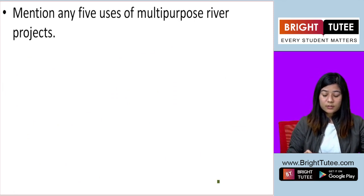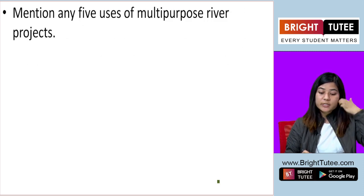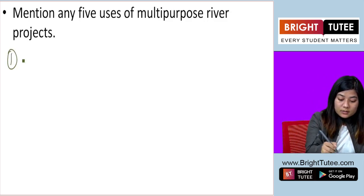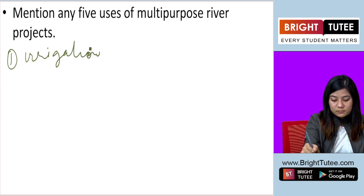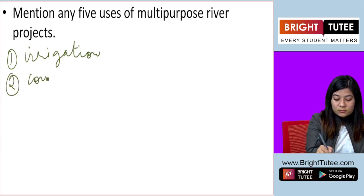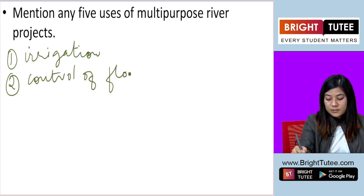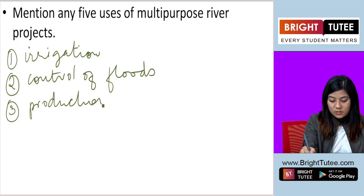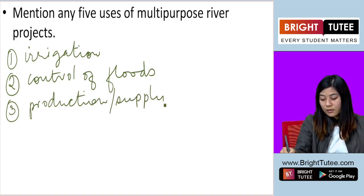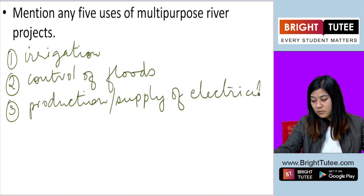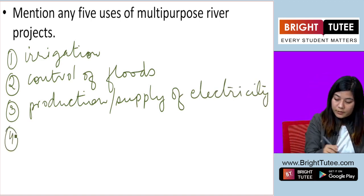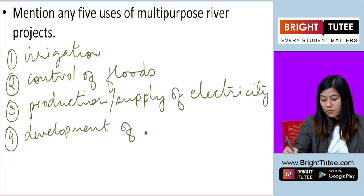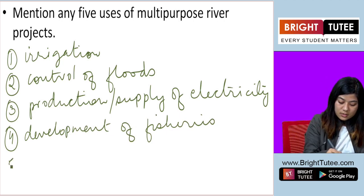Okay, so the next question is: mention any five uses of multi-purpose river projects. Number one is for irrigation, number two control of floods, number three electricity production or supply of electricity, number four development of fisheries, and number five...